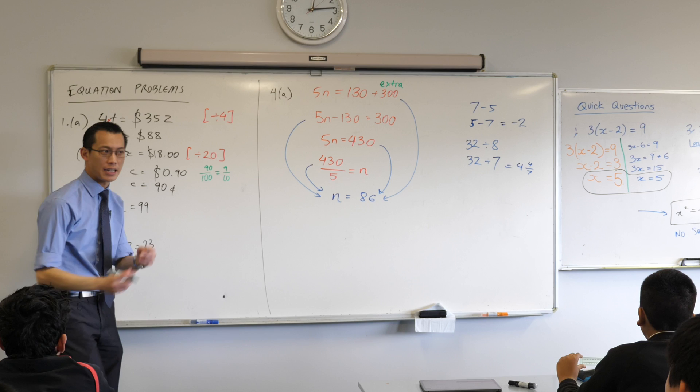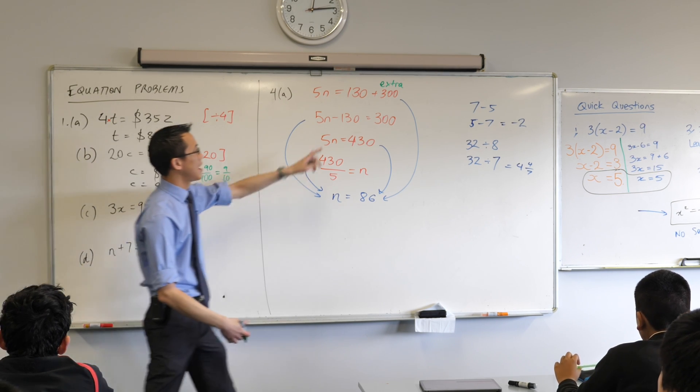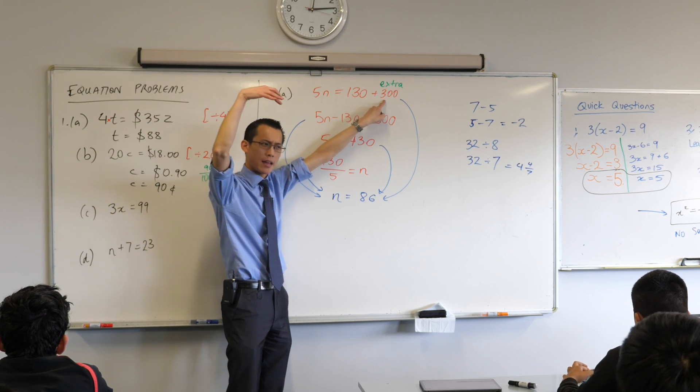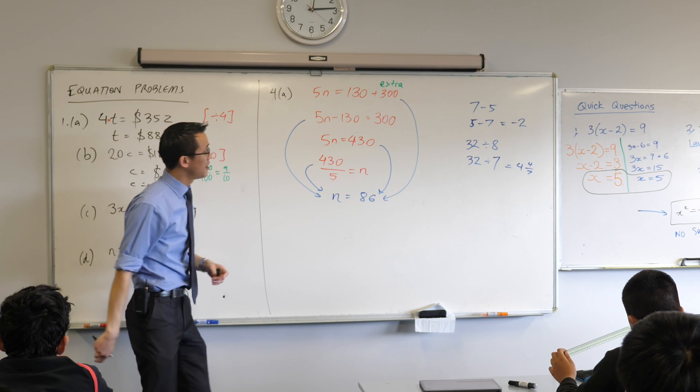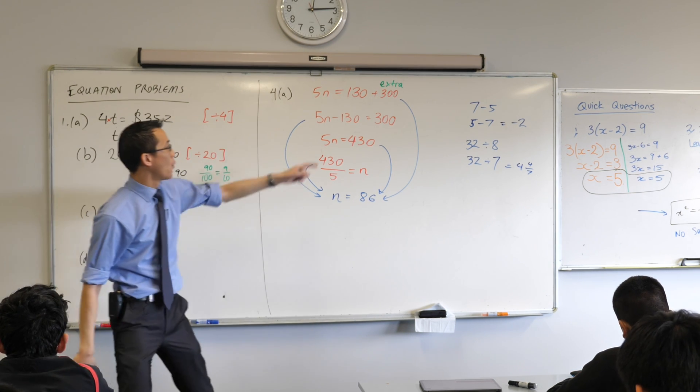Okay you just said a really important word there which was the word extra, which I think is a word that's not in the question but it is implied. The word profit implies that it's more than, you've got to cover your running costs first and then this is the thing on top of that. Does that make sense? In fact I think you literally did that with your hands like it's extra. Okay so in fact the 130 and 300 are separate and that's why we're adding them here.